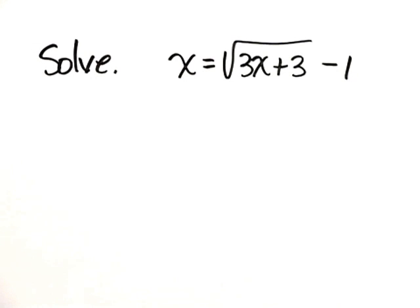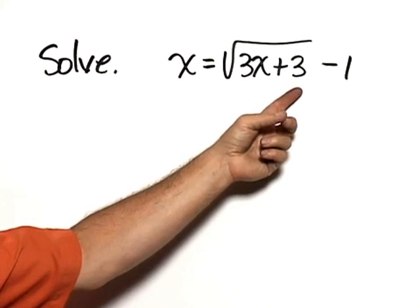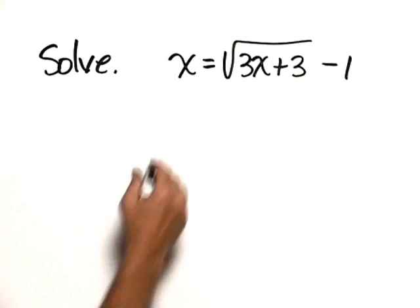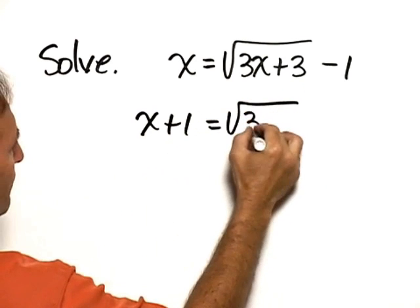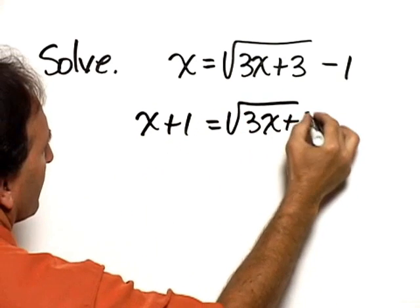Solve x equals the square root of 3x plus 3 minus 1. To solve for x, we need to isolate this radical expression. So the first thing we'll do is add 1 to both sides. So we have x plus 1 equals the square root of 3x plus 3.